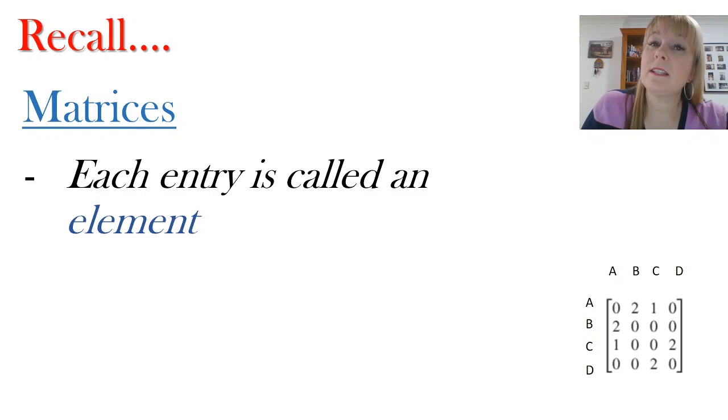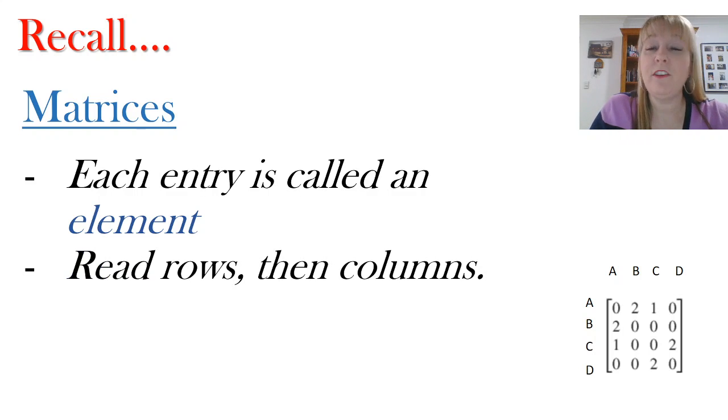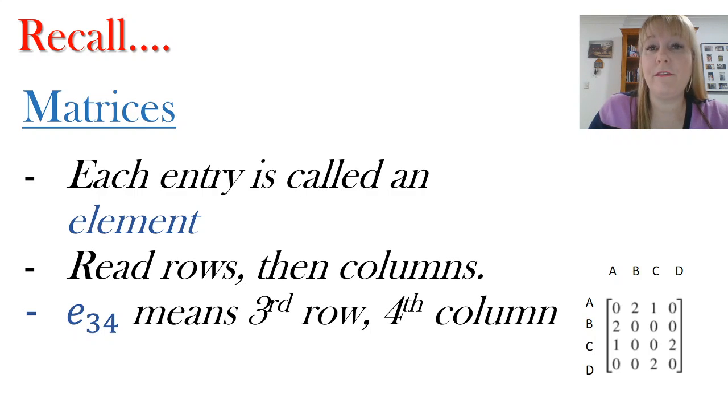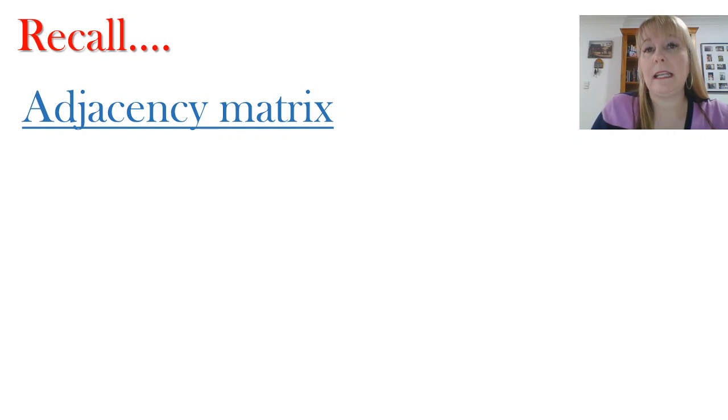Each entry inside the matrix is called an element, and they are named in a specific way. Firstly, we read from rows and then from columns. So E34 would be element 34 from the third row and the fourth column. So it's very important that we're naming our elements in our matrix correctly.